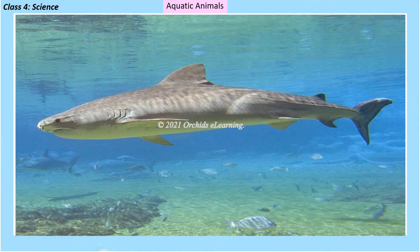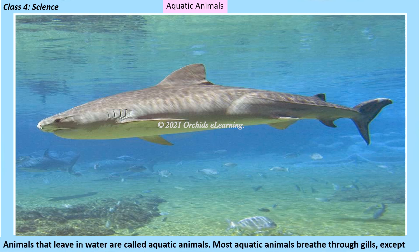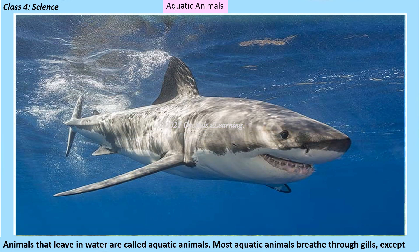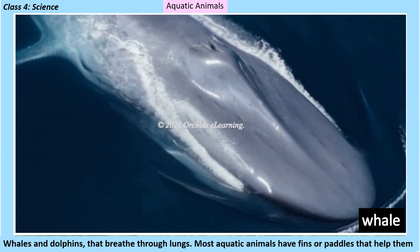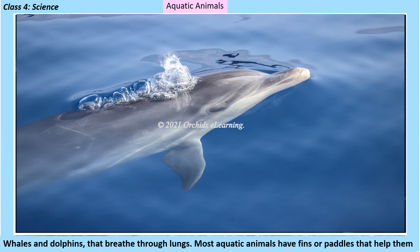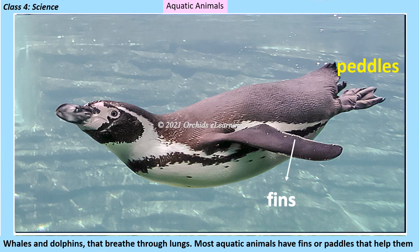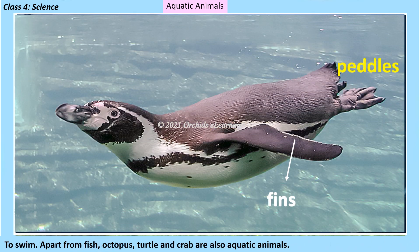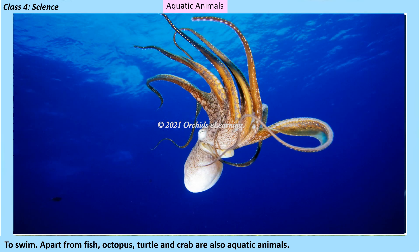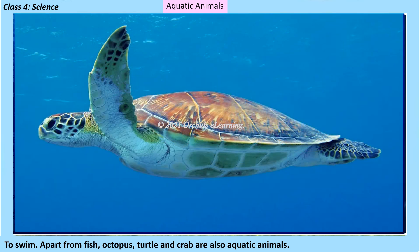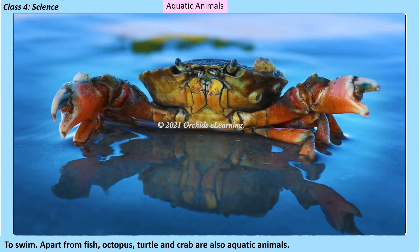Aquatic animals: animals that live in water are called aquatic animals. Most aquatic animals breathe through gills, except whales and dolphins that breathe through the lungs. Most aquatic animals have fins or paddles that help them to swim. Apart from fish, octopus, turtle, and crab are also aquatic animals.